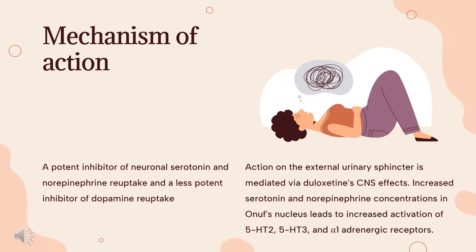Mechanism of Action: Duloxetine is a potent inhibitor of neuronal serotonin and norepinephrine reuptake and a less potent inhibitor of dopamine reuptake. Duloxetine has no significant affinity for dopaminergic, adrenergic, cholinergic, histaminergic, opioid, glutamate, and GABA receptors. Action on the external urinary sphincter is mediated via duloxetine's CNS effects.